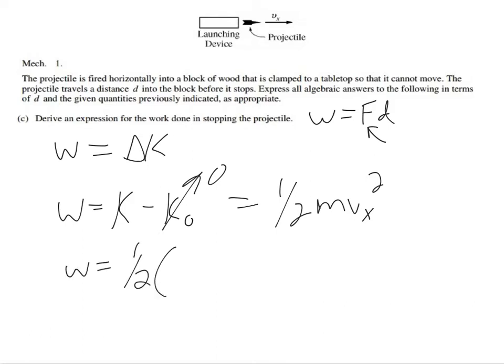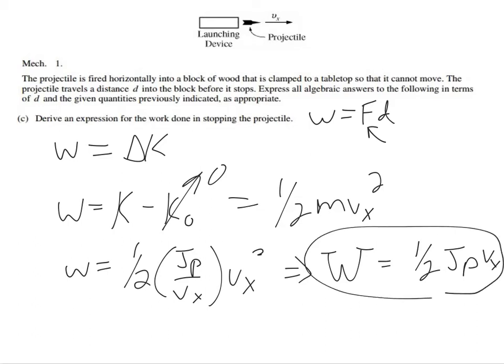So when you're looking for work, try to think about changing kinetic energy because this is by far the easiest. So we have kinetic final minus initial, but the initial is zero, so it just ends up being one-half m v_x squared.